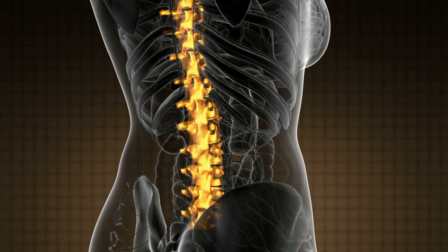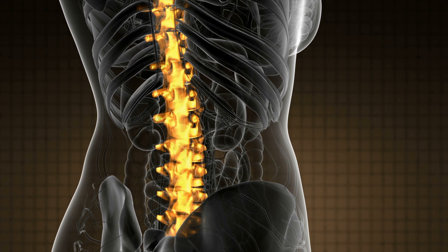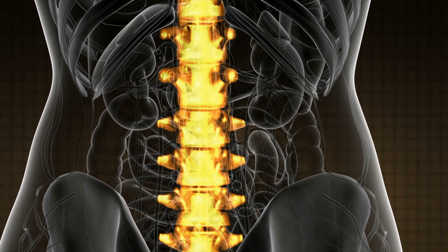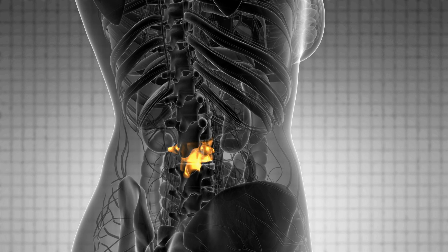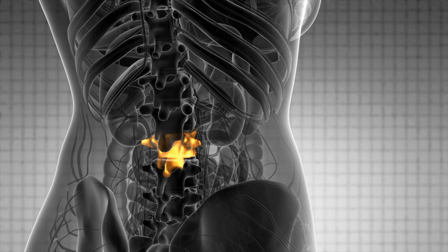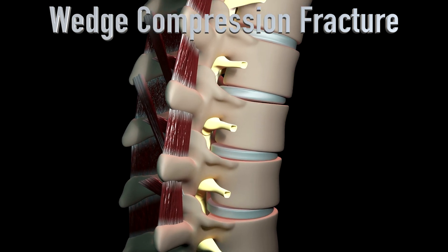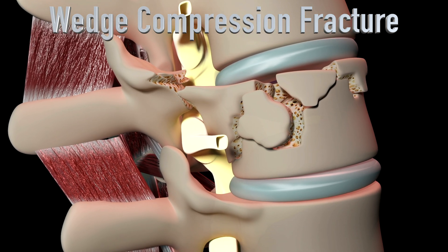These compression fractures can occur anywhere in the backbone, but they are seen most commonly in the lower thoracic vertebrae — that is T10, T11, or T12. The next most common location is the upper lumbar segment, such as L1. A spinal fracture due to osteoporosis or weak bones is called a compression fracture, also known as a vertebral fracture, osteoporotic fracture, or wedge fracture.